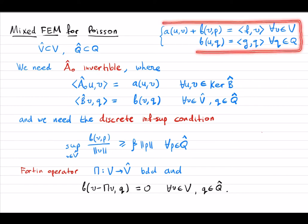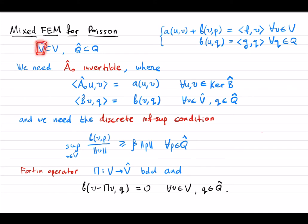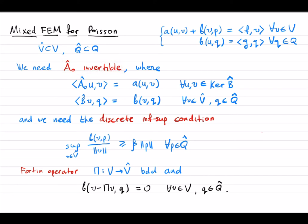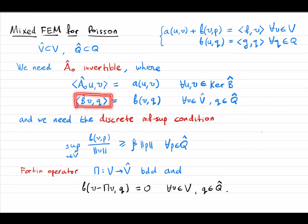This is the general formulation of saddle point problems. We have subspaces V-hat and Q-hat. In order to have a well-posed discrete problem and quasi-optimal convergence rate, we need the operator A-hat-zero to be invertible, where A-hat-zero is defined by restricting the bilinear form to the kernel of B-hat, and B-hat is defined by restricting the bilinear form b into V-hat and Q-hat.